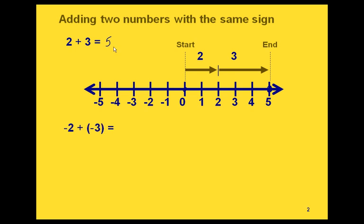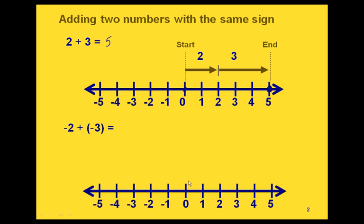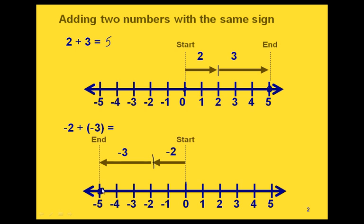Now let's look at an example with two negative numbers. We can do this the same way, only our numbers will be represented by arrows that go to the left, since these are negative numbers. So we have our number line again. We're going to start at 0, go two units to the left for our negative 2, and then starting there, we're going to go three units to the left for our negative 3. Where we end up is negative 5. So the answer to this addition problem is negative 5.